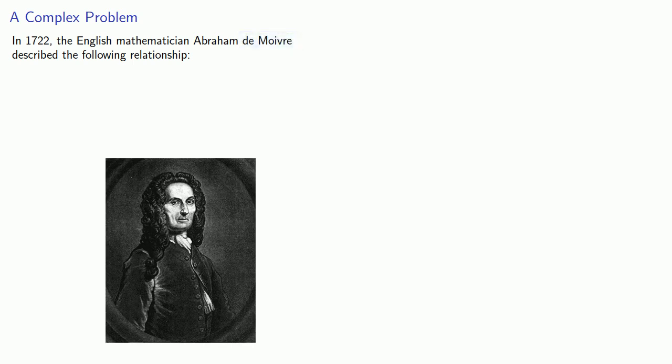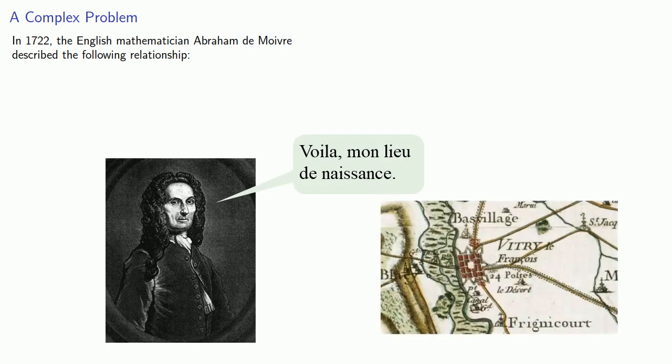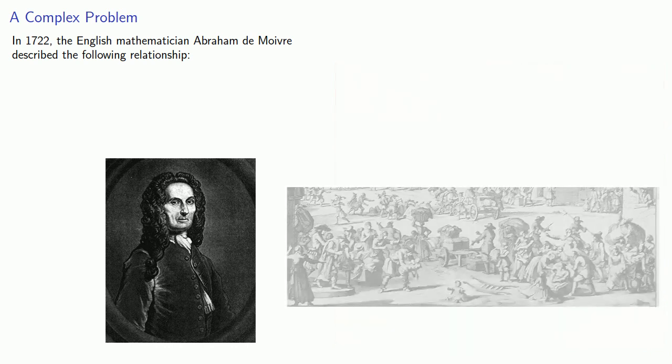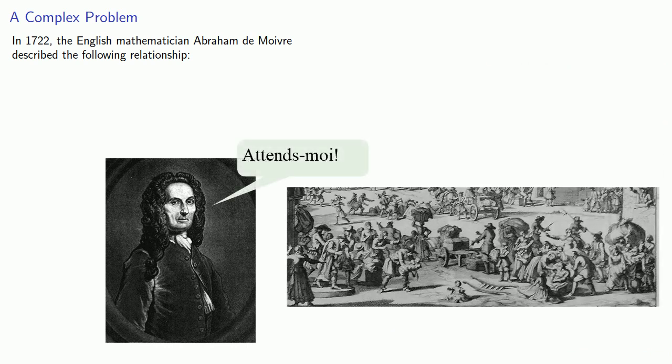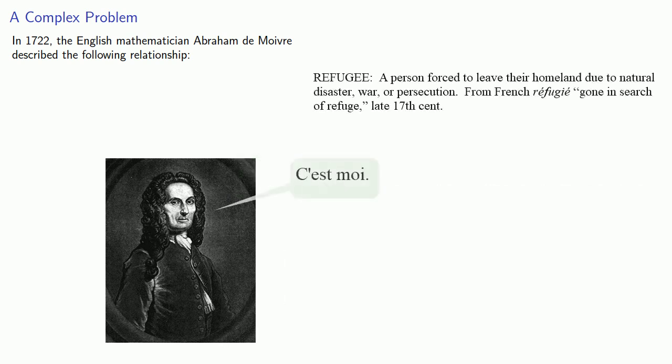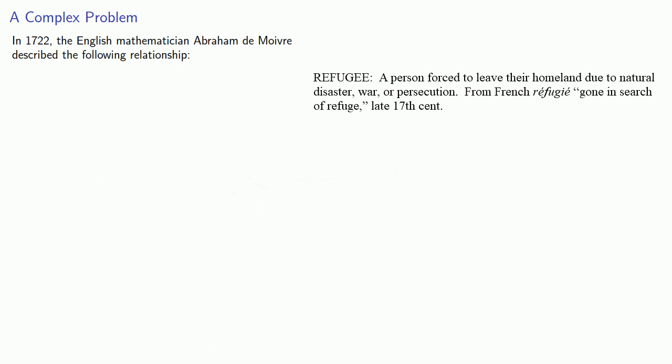Well, yes. Sure, de Moivre was born in France, but Christian fanatics forced de Moivre and thousands of others to flee across the channel to Great Britain, where their influx added a new word to the English language: refugee. And so Abraham de Moivre should be considered an English mathematician. So this English mathematician, Abraham de Moivre, described the following relationship.